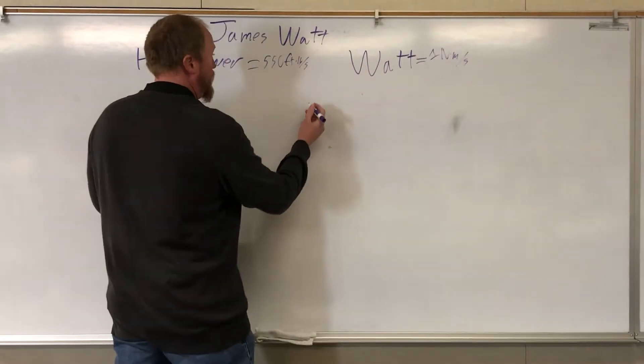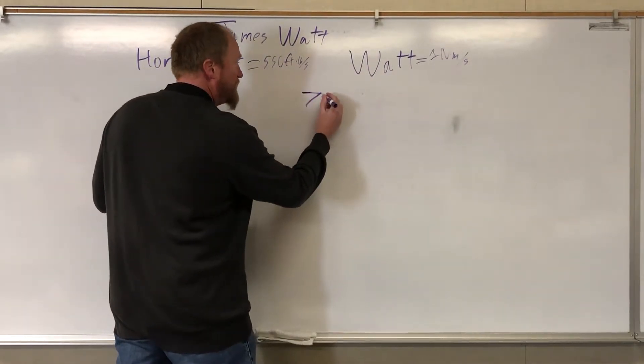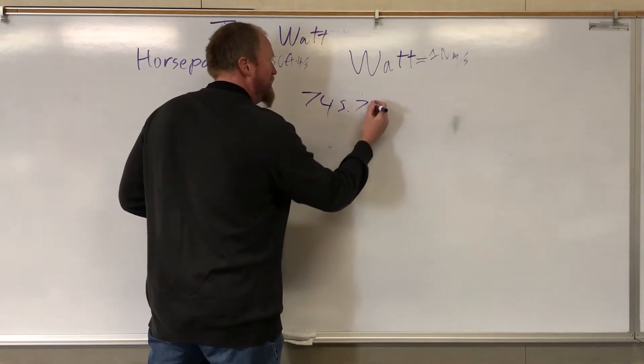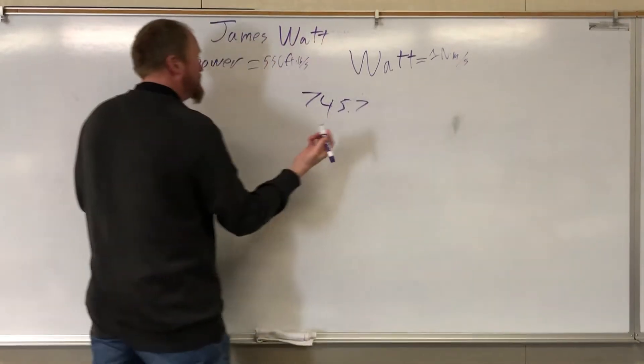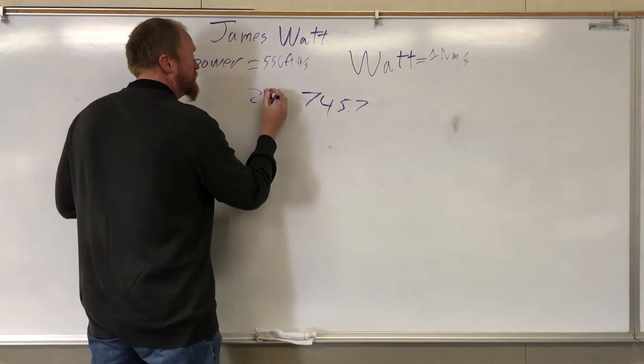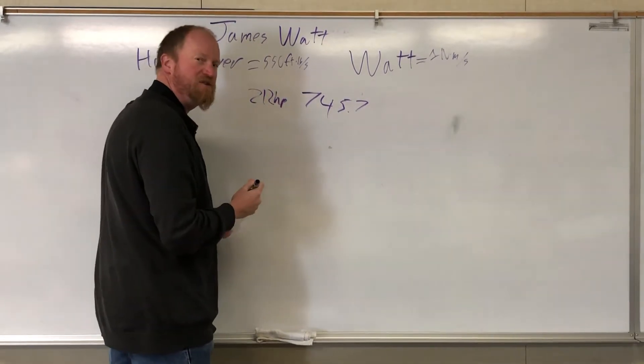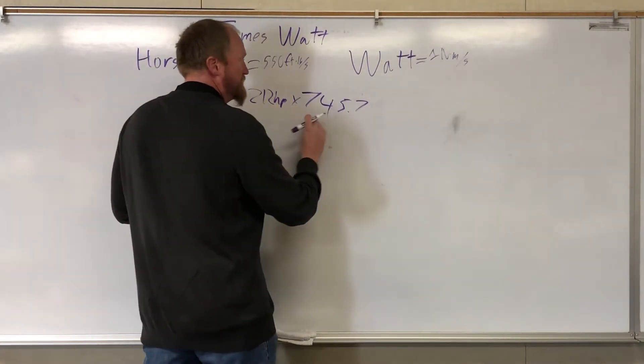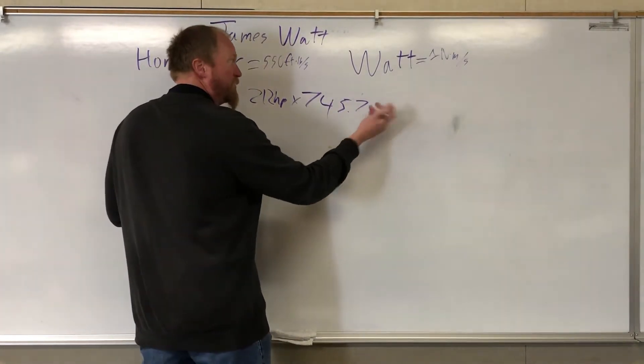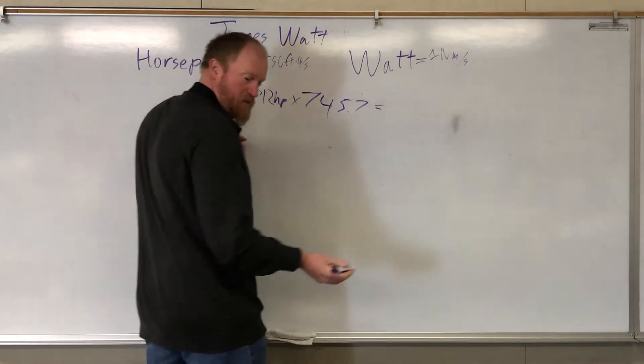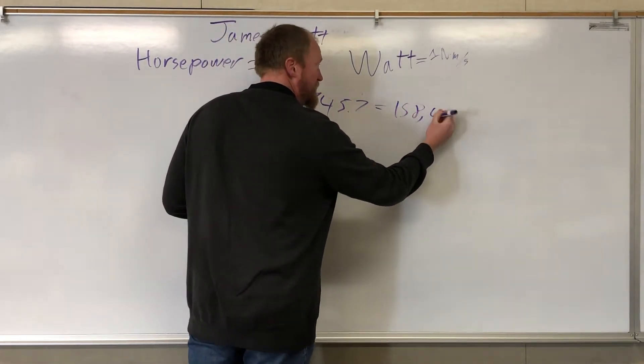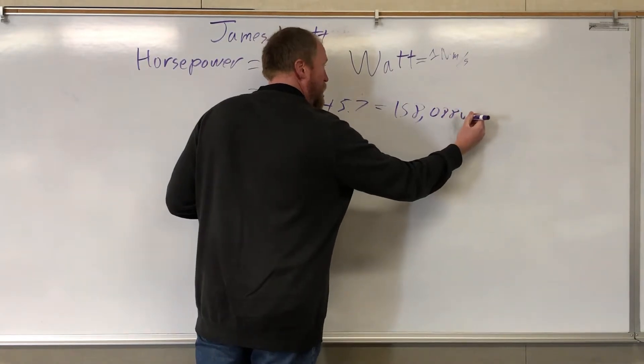So one horsepower is equal to 745.7 watts. So if you take my car, my first car was 212 horsepower. I don't know what the heck I was thinking with that. So I would multiply that by 745.7, and I would get a number of 158,088 watts.